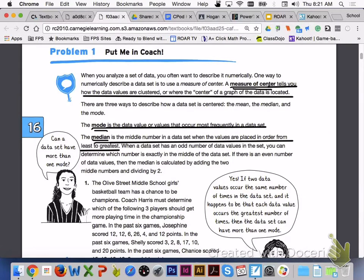The median is the middle number in a data set when the values are placed in order from least to greatest. When a data set has an odd number of data values in the set, you can determine which number is exactly in the middle of the data set. If there is an even number of data values, the median is calculated by adding the two middle numbers and dividing by two.